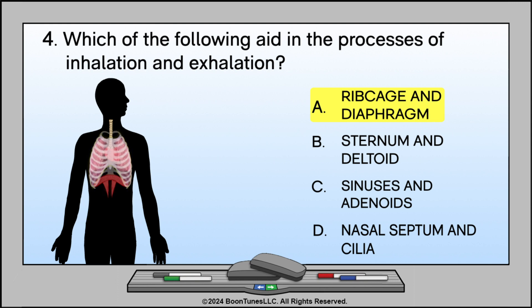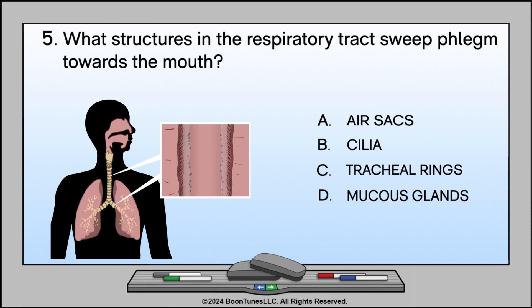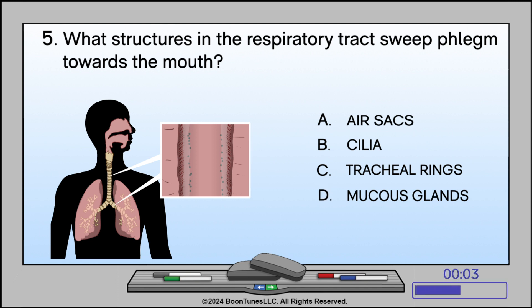What structures in the respiratory tract sweep phlegm towards the mouth? A. Air sacs. B. Cilia. C. Tracheal rings. D. Mucus glands. The answer is B. Cilia.